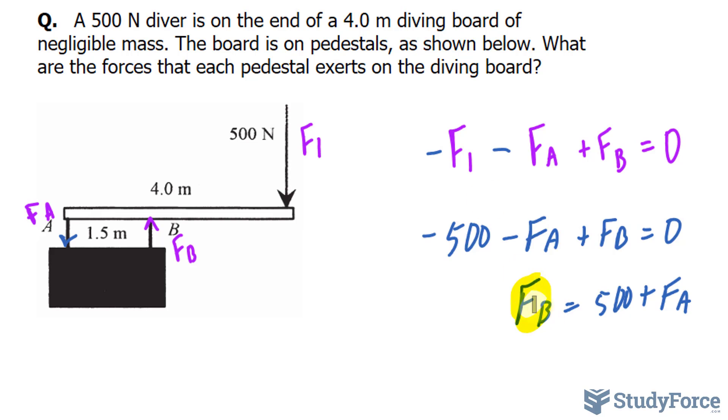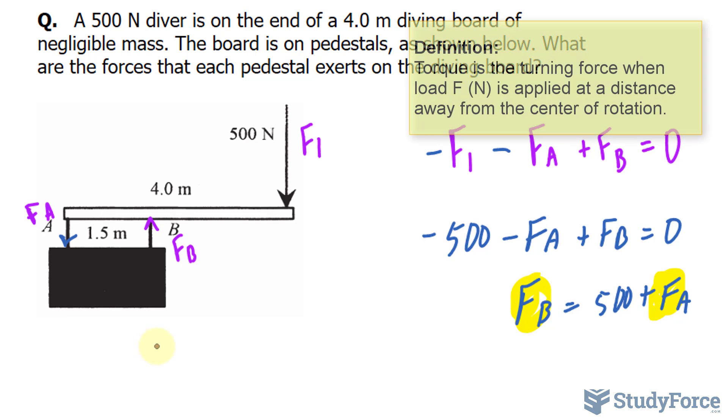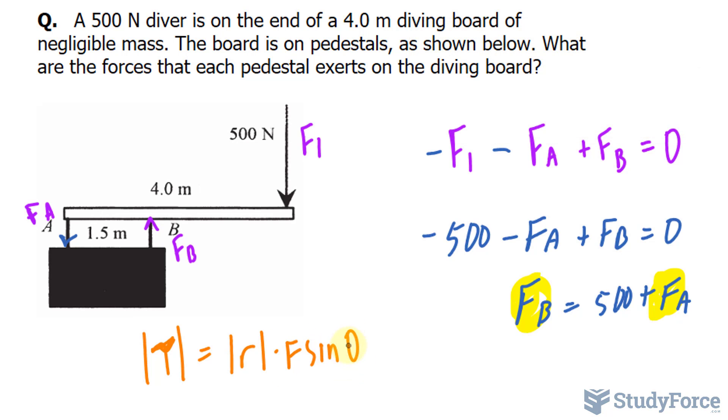And remember what we're looking for, we're looking for this force and that force. With that being said, how do we find FA and FB? In order to be successful with this problem, we have to also consider torque. So torque, the magnitude of torque, which I'm representing by T, or you can represent it by the Greek letter tau, the magnitude is equal to the radius times the force times sine theta.